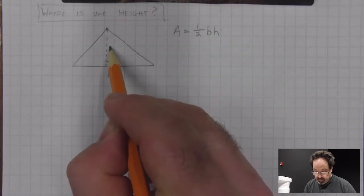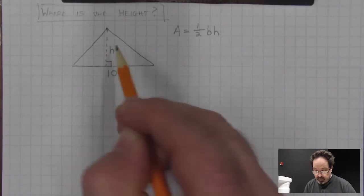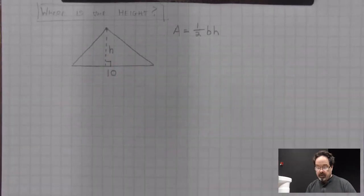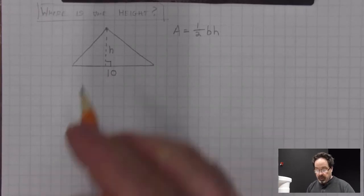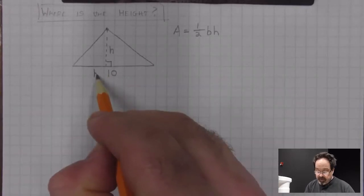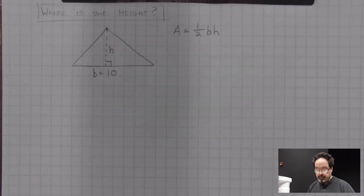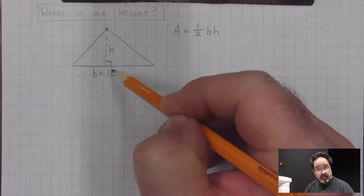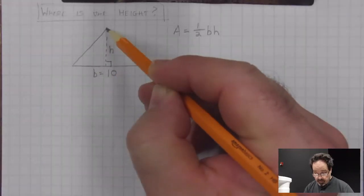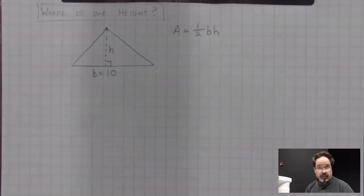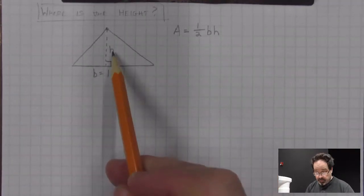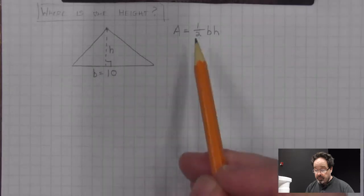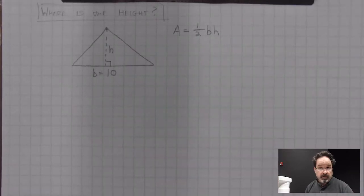This height we could label H. So for this triangle, we have a base equal to 10, and we have a height that is perpendicular, meeting at a right angle, drawn inside the triangle. If we knew the measure of the height, then we can put these two measures into the formula and calculate the area.